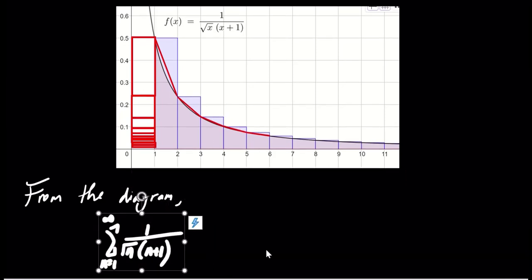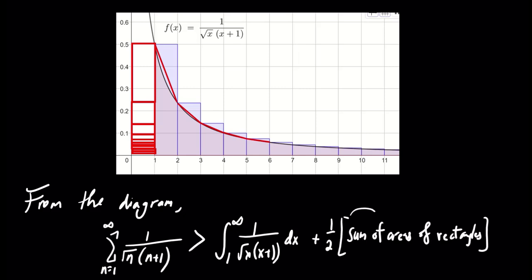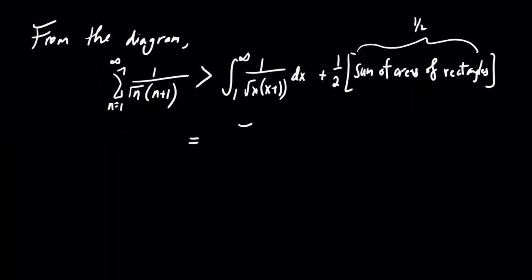The sum from n equals 1 to infinity of 1 over the square root of n times n plus 1 is greater than the integral from 1 to infinity of 1 over the square root of x times x plus 1 plus 1 half times 1 half. This equals pi over 2 plus 1 half of 1 half which simplifies to 2 pi plus 1 divided by 4.